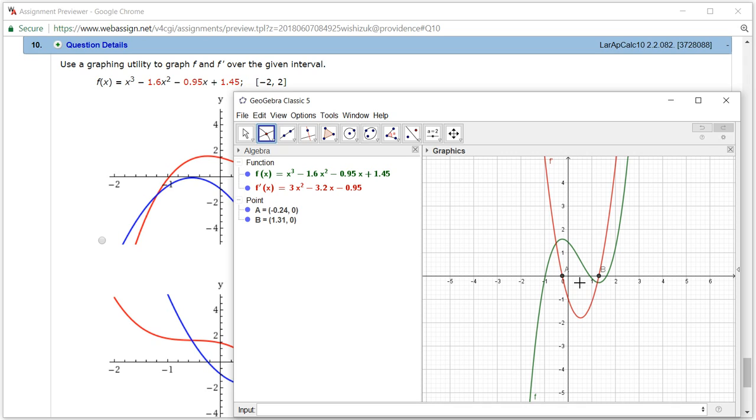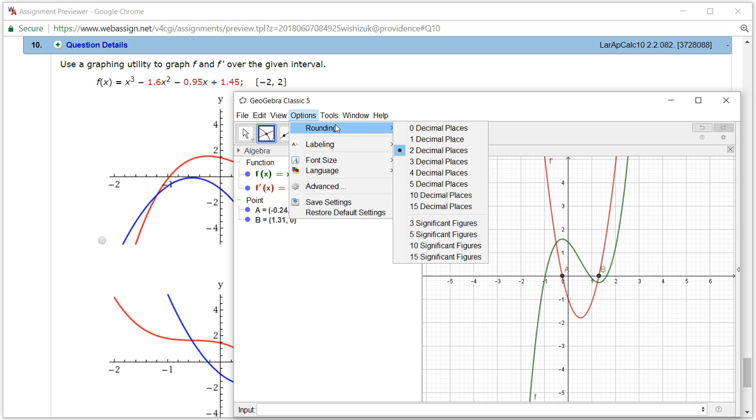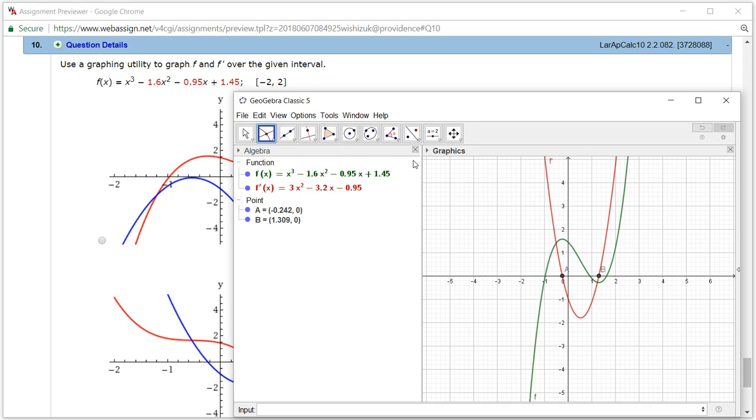So we want to intersect this derivative curve with the x-axis. So we found those two values, two points. And we got those two x-intercepts there. And you can see that we only see two decimal places. So we can just go to Option and the rounding. And we would like to see three decimal places.